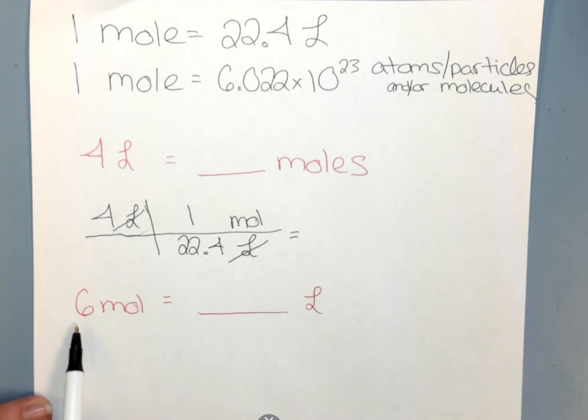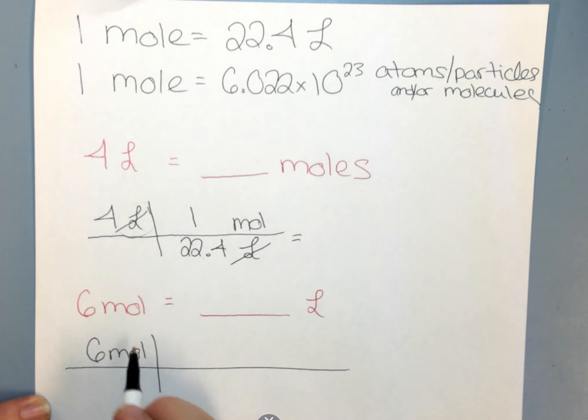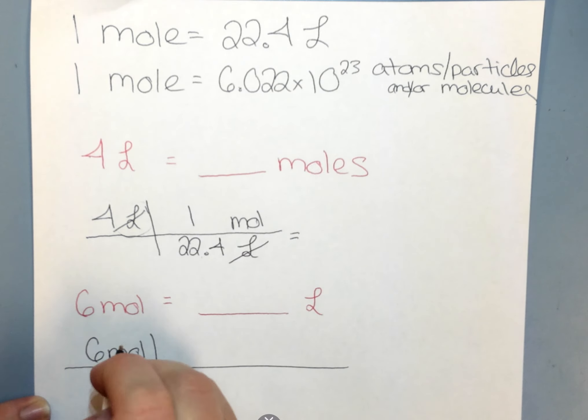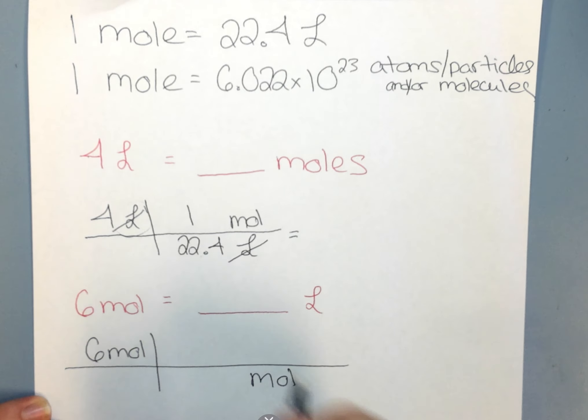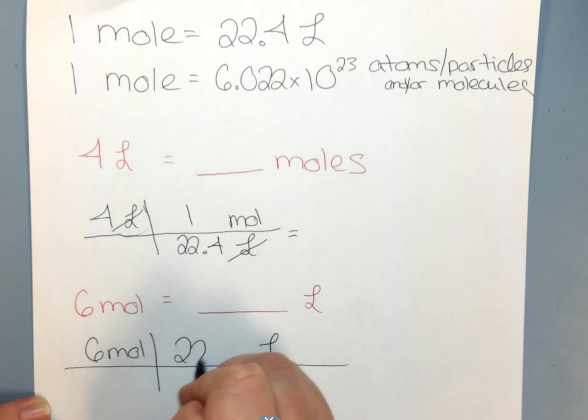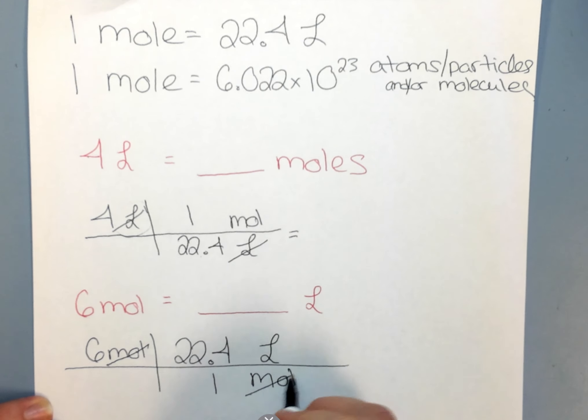Same thing holds true. This one, we're just going the opposite direction. So if I'm starting with 6 moles, I'm given as the numerator. Cross my unit down, so if moles is up top, moles goes on the bottom. And we're trying to get to liters. Looking at my conversion factor, same thing. 1 mole is 22.4 liters. So moles cancels. And I'm left with my answer in liters. So I just do 6 times 22.4 divided by 1.